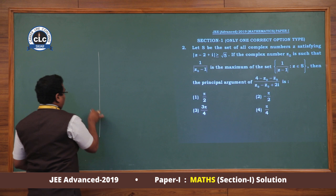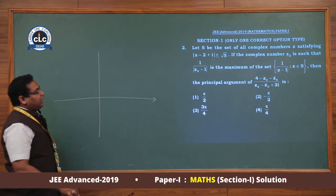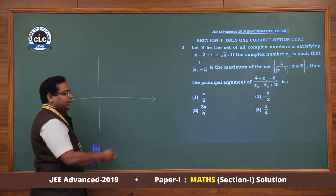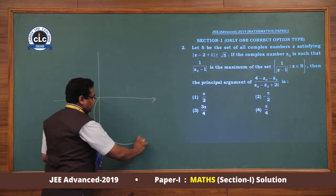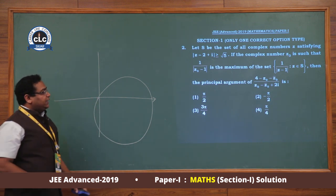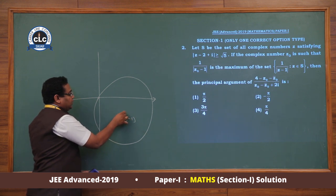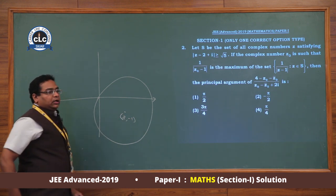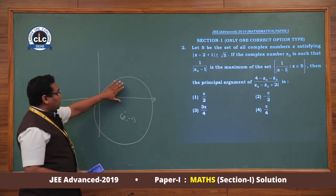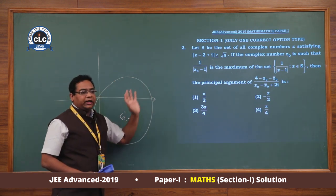If we plot this circle — if I satisfy origin in it, origin also satisfies it — so the circle is like this, center is (2, −1), somewhere here. The region represents the exterior portion of this circle. Further in the question, we need the maximum value of 1/|z − 1|.